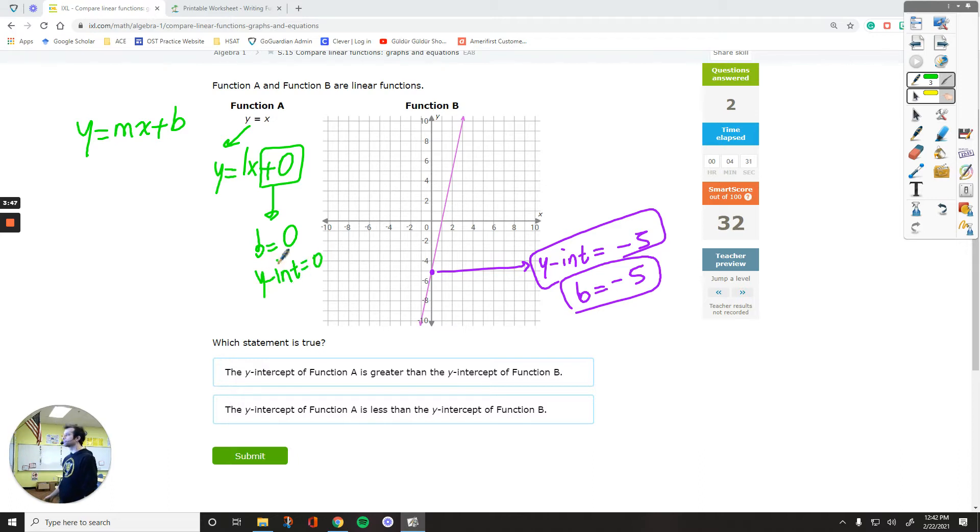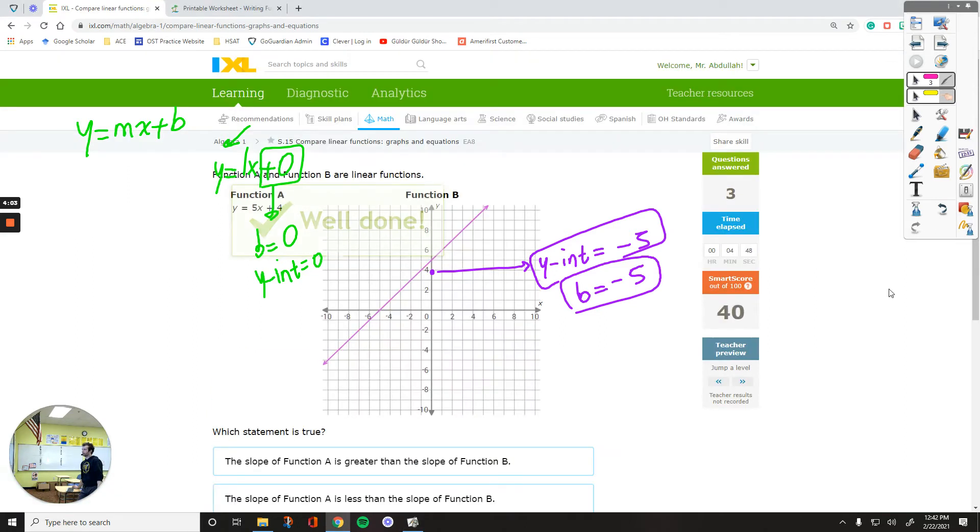Again, they are just the same. So which one is greater? The one on the left is greater because negative five is less than 0. So in the answer, it should say something like the y-intercept of function A is greater than the other one.